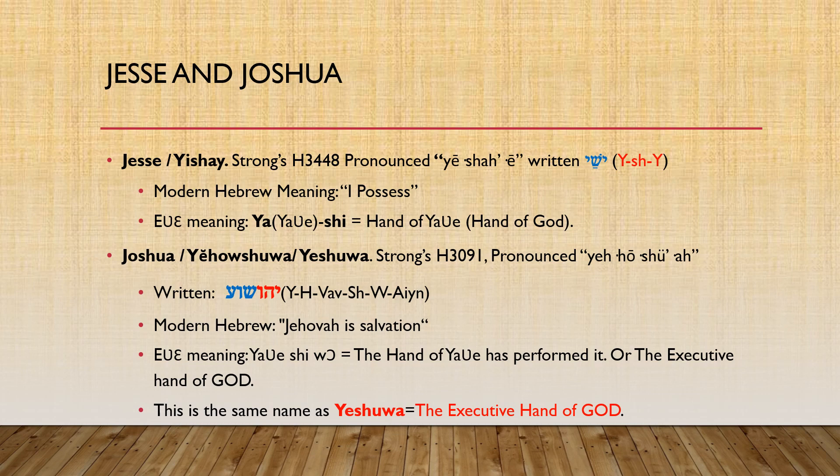Contextually, the Bible tells us that Jesse or Yashi was the father of King David. David — we already know the Ewe name is Devi, which means child or youngster. The Bible tells us that David was the youngest of his brethren. For the fact that Yashi was the father of David, who also became the ancestor of Yesu, he indeed was used by the Most High. So we can say that Yashi was indeed the Hand of the Most High to bring prophecy to pass.